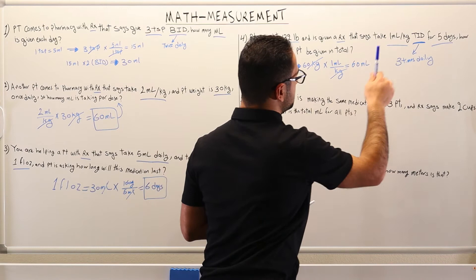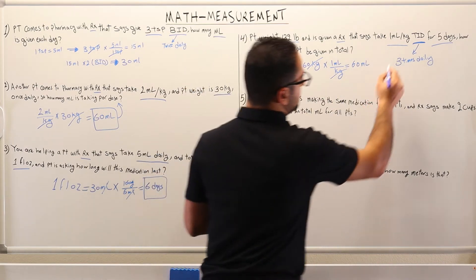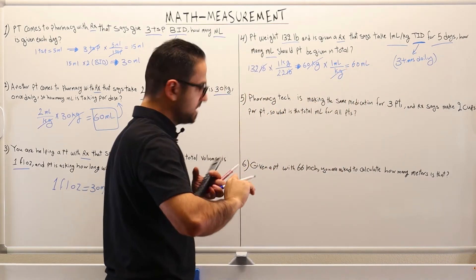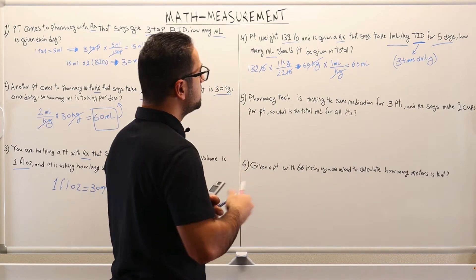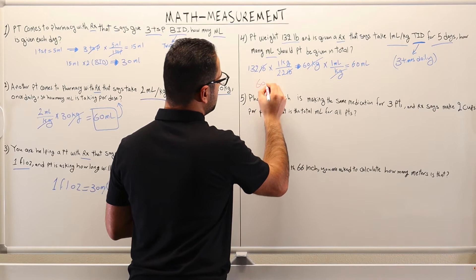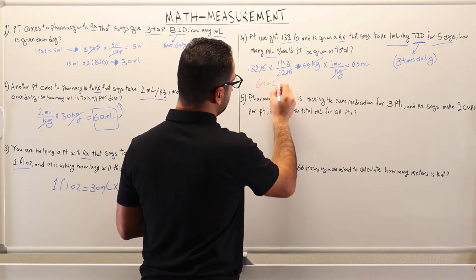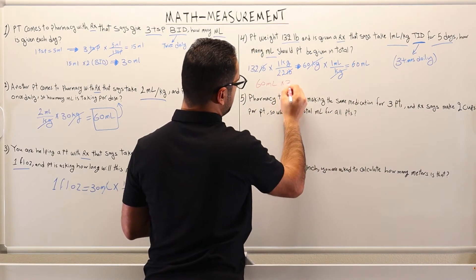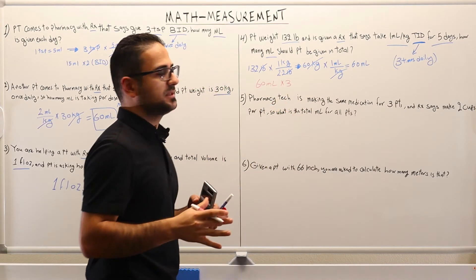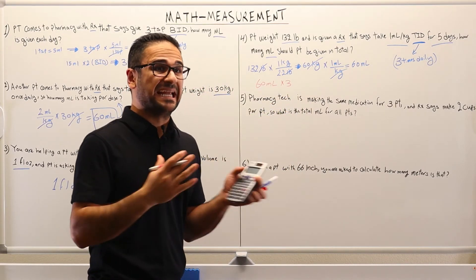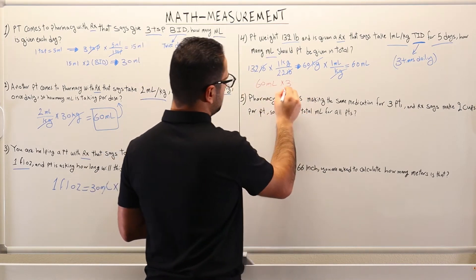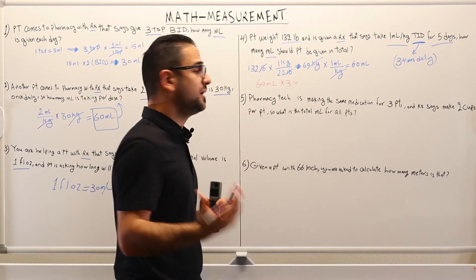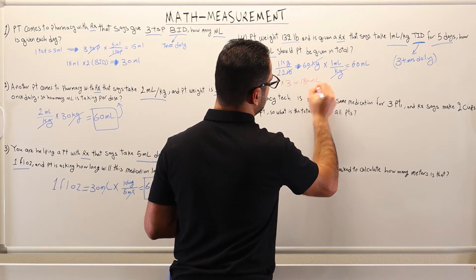This is given TID, so three times daily. We multiply 60 milliliters per dose by three times daily to figure out how many milliliters the patient is receiving daily. That gives us 60 times three, which is 180 milliliters daily.